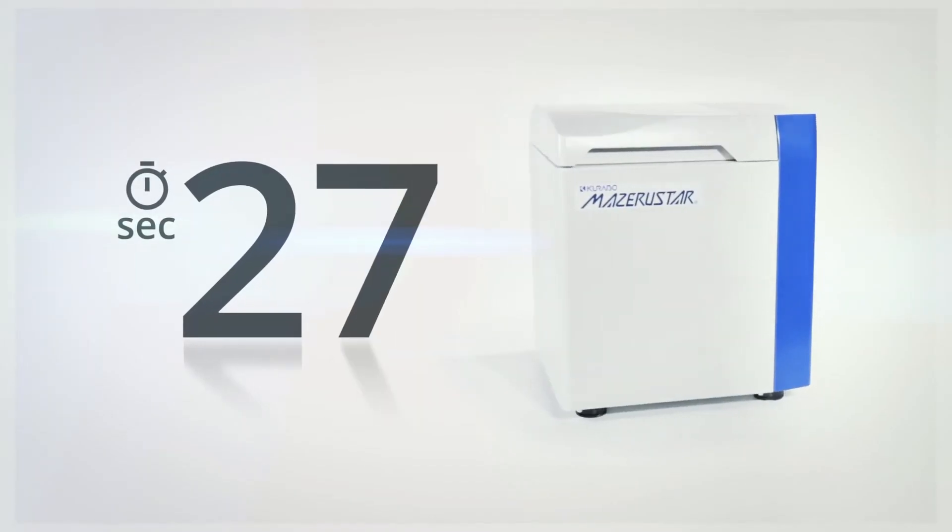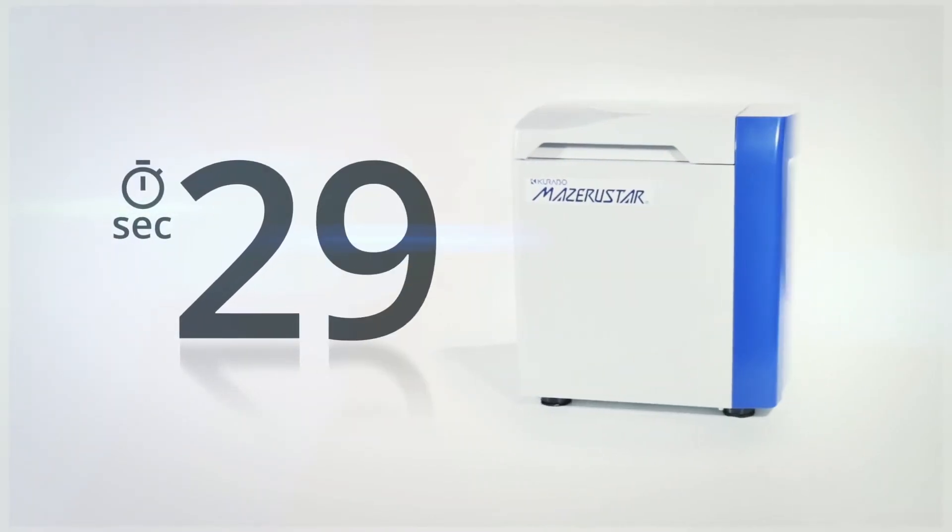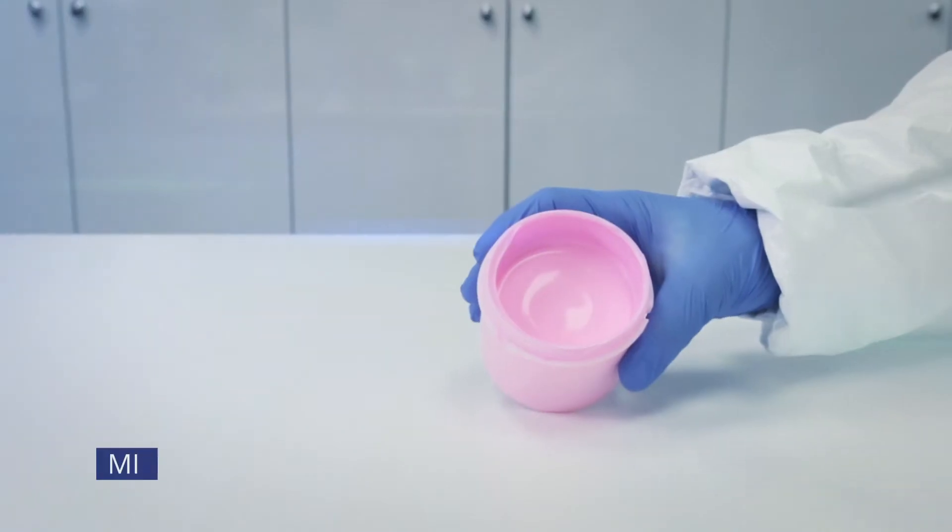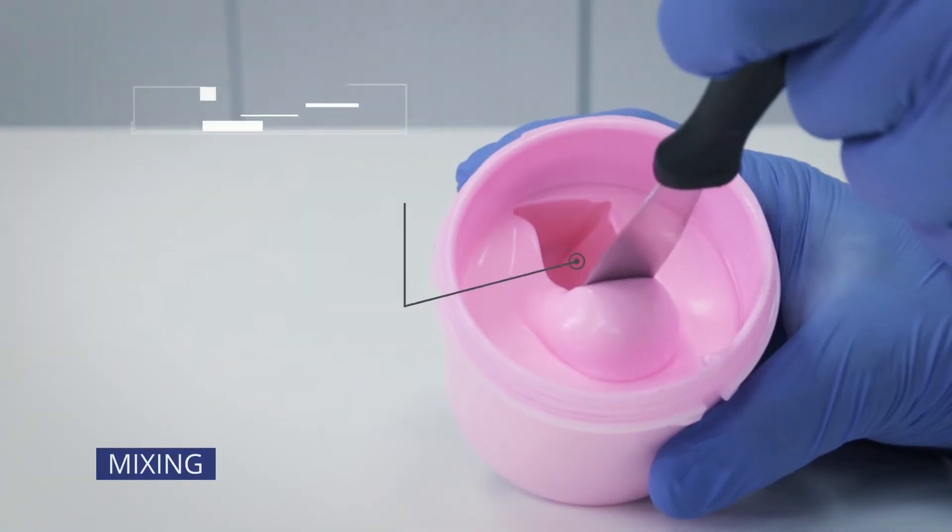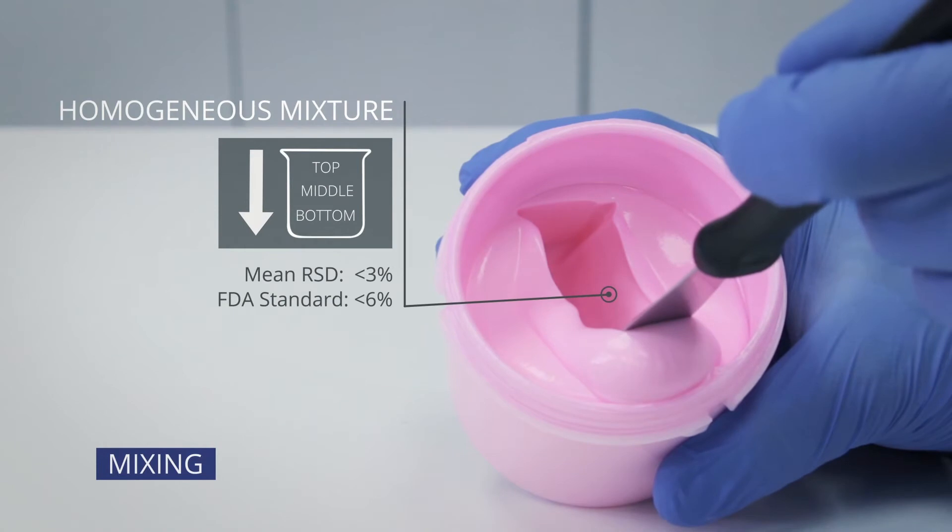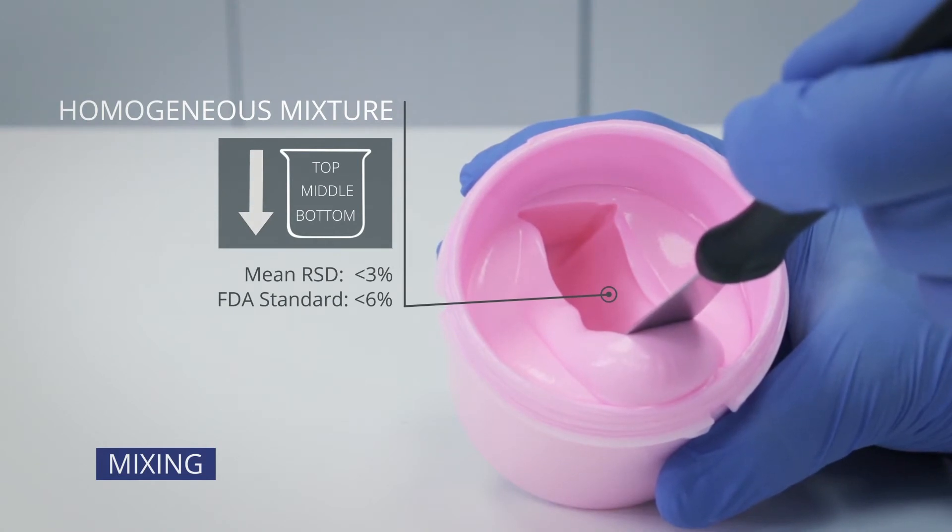The MESS can mix and de-aerate a topical compound in just 30 seconds. By streamlining their compounding process, the pharmacist can ensure to deliver quality preparations to their patients while saving time and money.